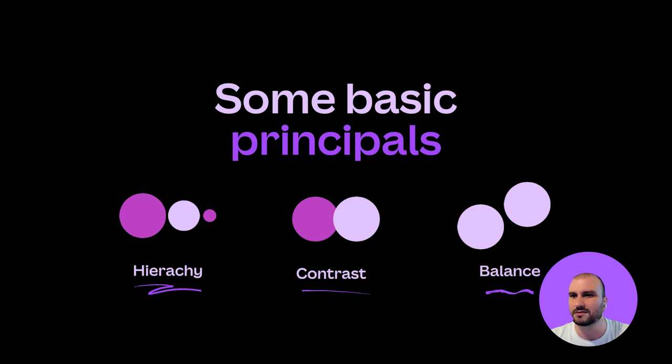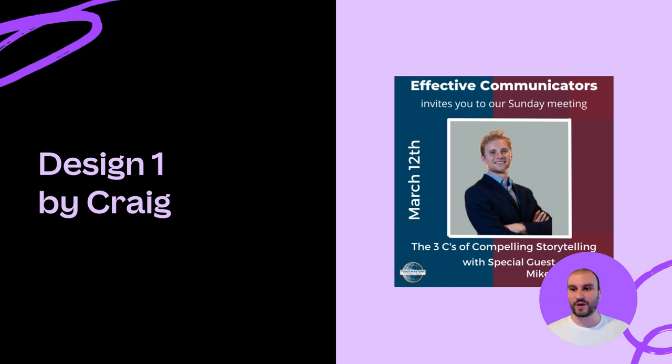They say that opposites attract — that's a very clear example of contrast. You can achieve this with color or with size, for example. And lastly, balance. Simply put, balance is the distribution of the visual weight of your design.